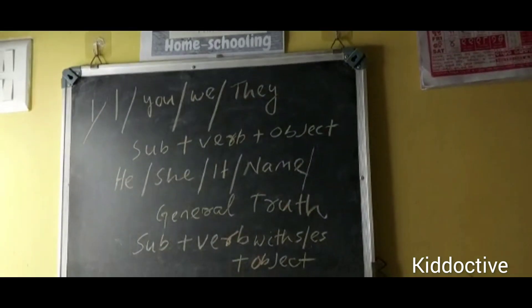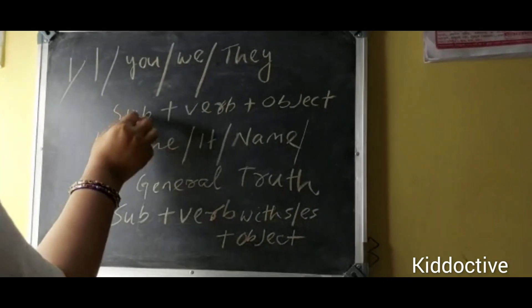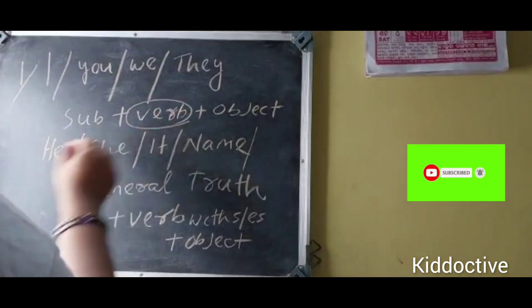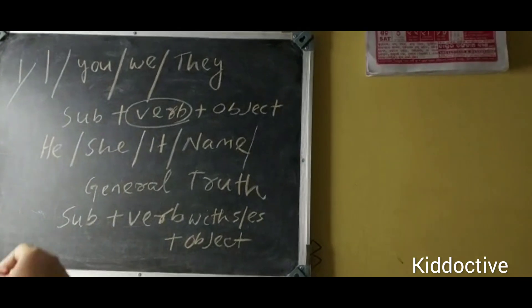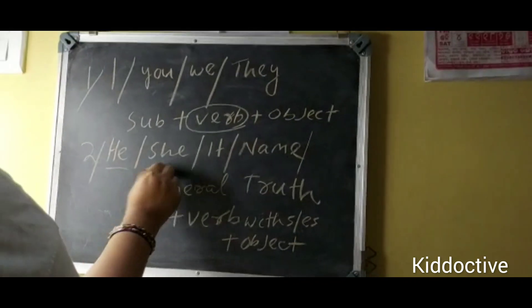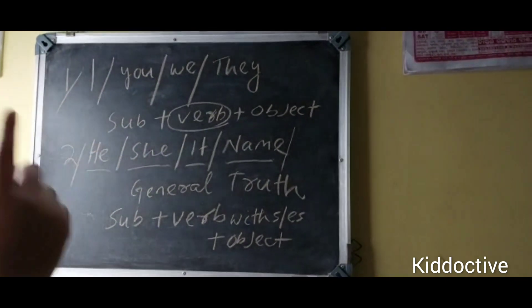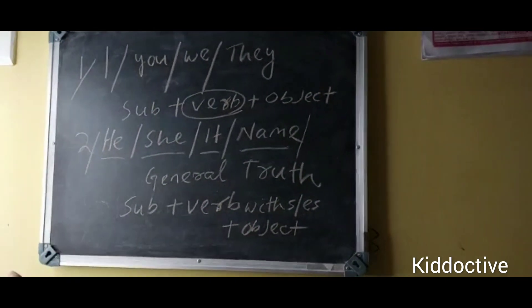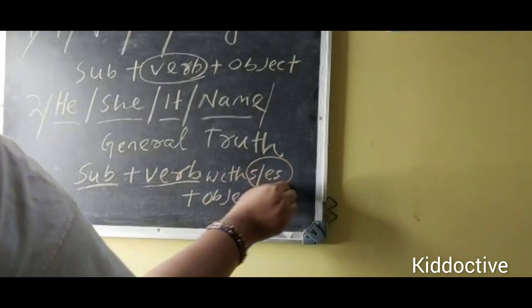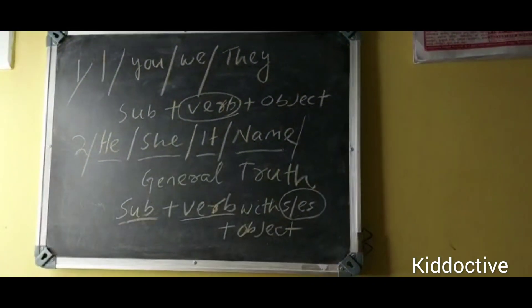With 'I', we use the original form: I wake up, I brush my teeth, I play football. But when it comes to 'he', 'she', 'it', or any name like Emma, Raj, my father, my mother — we use the verb with 's' or 'es' plus object. That is the second rule.